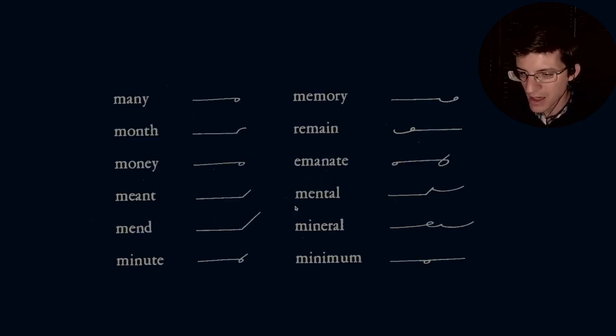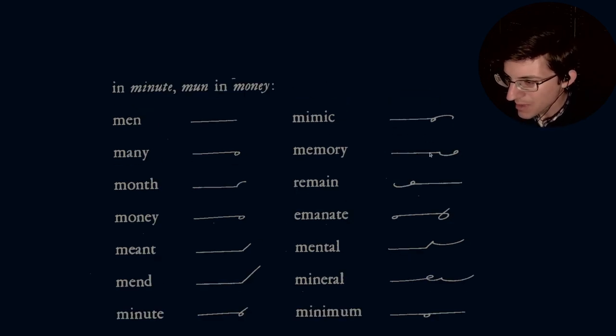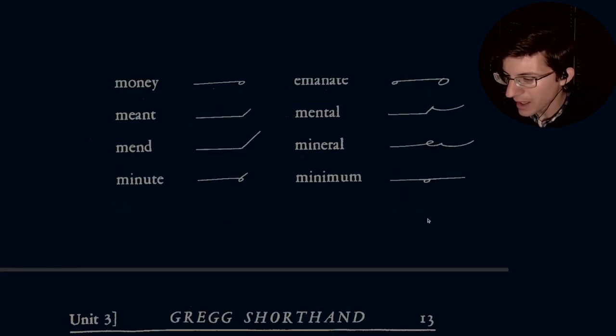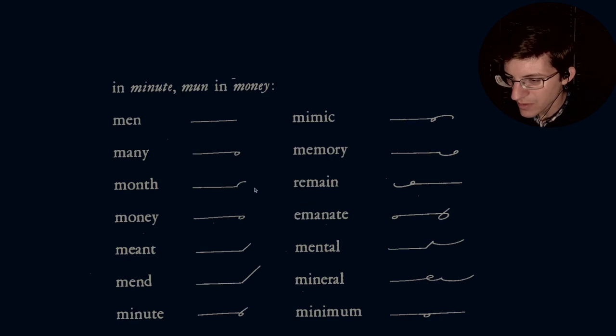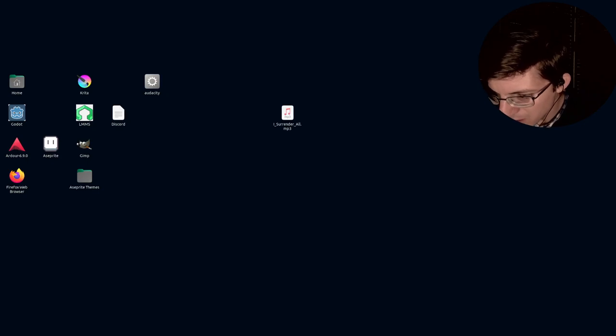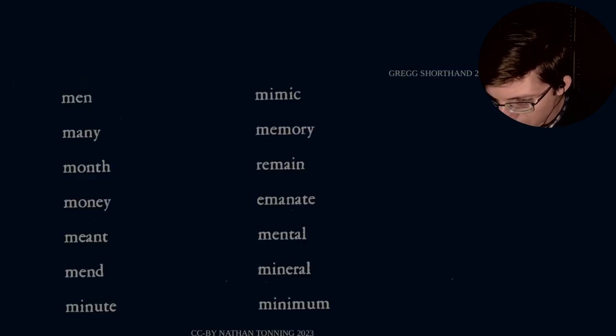So we have these: men, many, month, money, meant, mend, minute, mimic, memory, remain, emanate, mental, mineral, and minimum. So let's go ahead and see that in action. The annotation... what is it set on? This one needs to be 27. There we go.